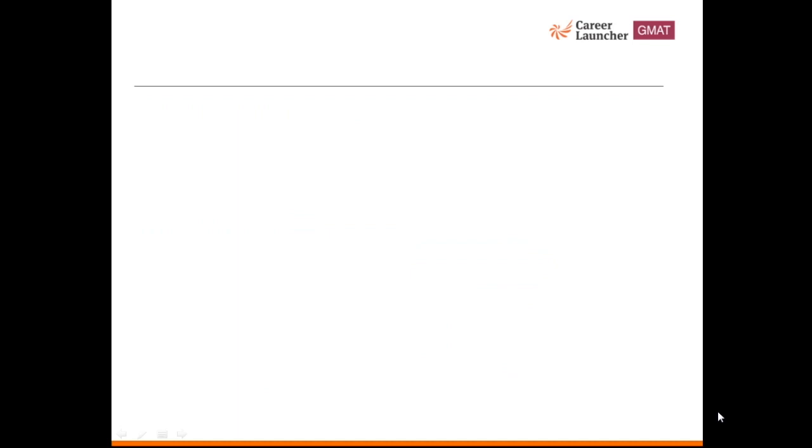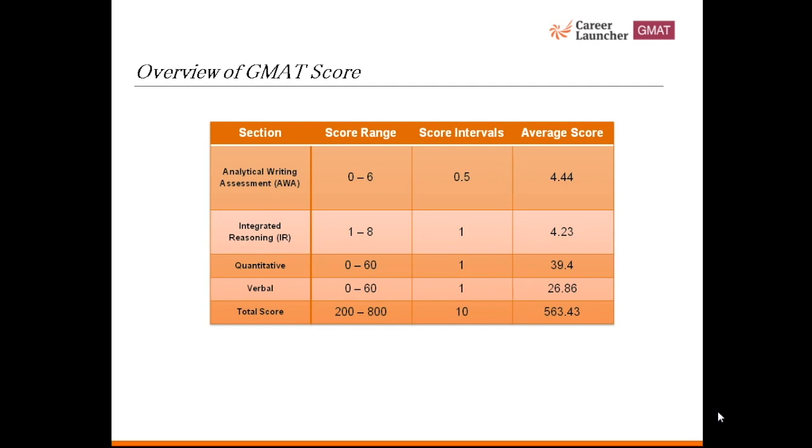AWA is scored on a scale of 0 to 6 with intervals of 0.5, meaning scores are given as 1, 1.5, 2, 2.5, 3, 3.5 and so on. A score of 5 or above is a very good score in this section and the average score is 4.44.